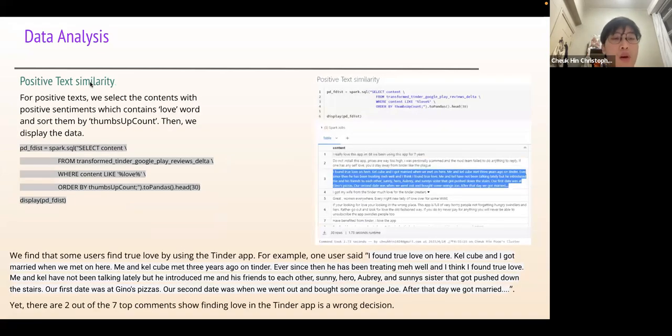We compute positive textuality. For positive text, we see that content with positive sentiment which contains the love word and sort them by thumbs up count. Then we display the data. We find that some users actually find true love by using the app. For example, one says I find true love in here. But actually there are still 207 comments showing that finding love in the Tinder app is a wrong decision, even when we filter the content which contains the love word.